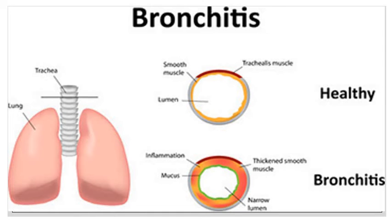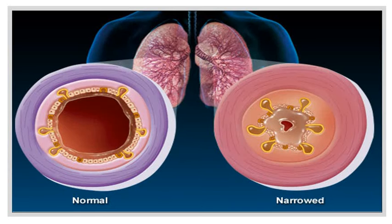For a better understanding, here's a picture of a healthy air passage and one in bronchitis. You can see there is inflammation of the lining of the bronchial tube. This one is probably a picture of chronic bronchitis because the narrowing is quite significant, due to repeated attacks of acute bronchitis.